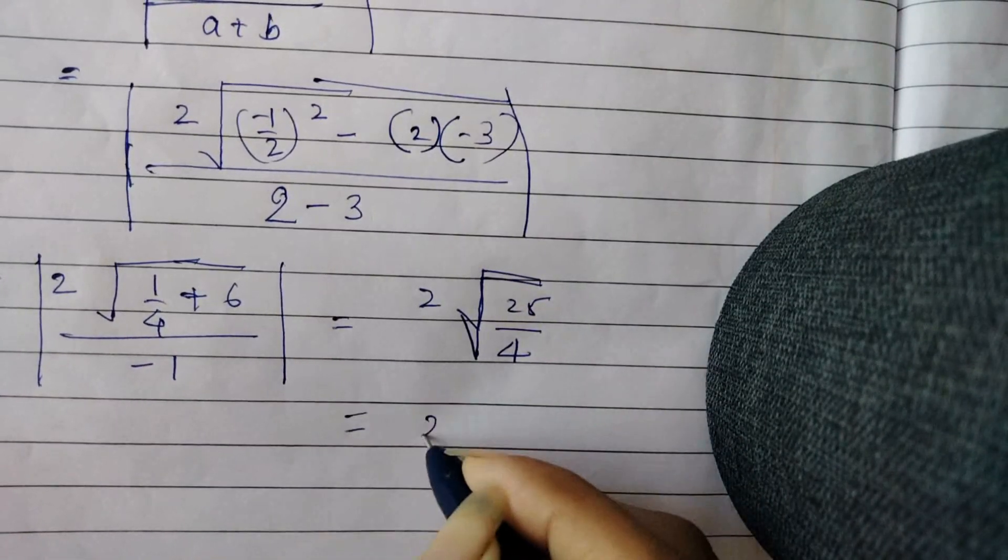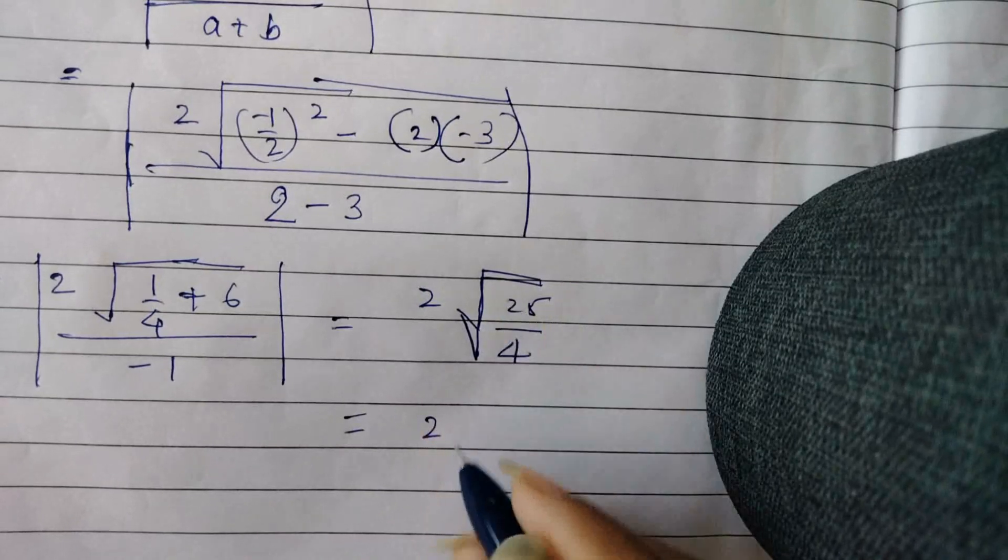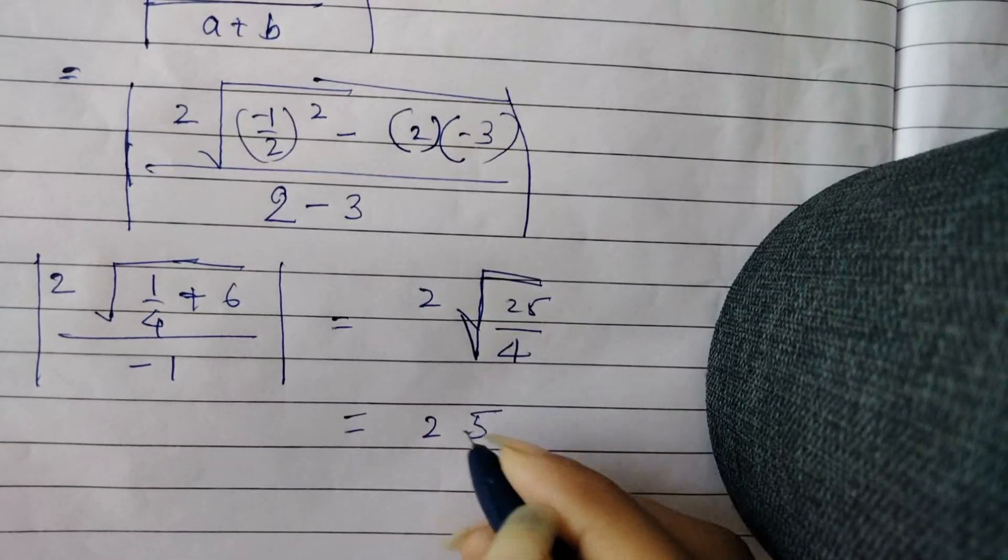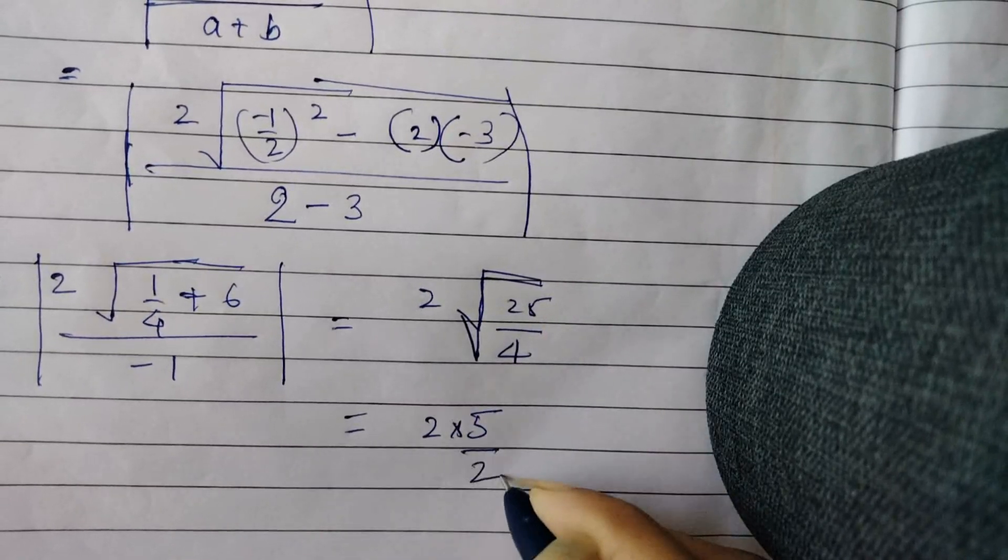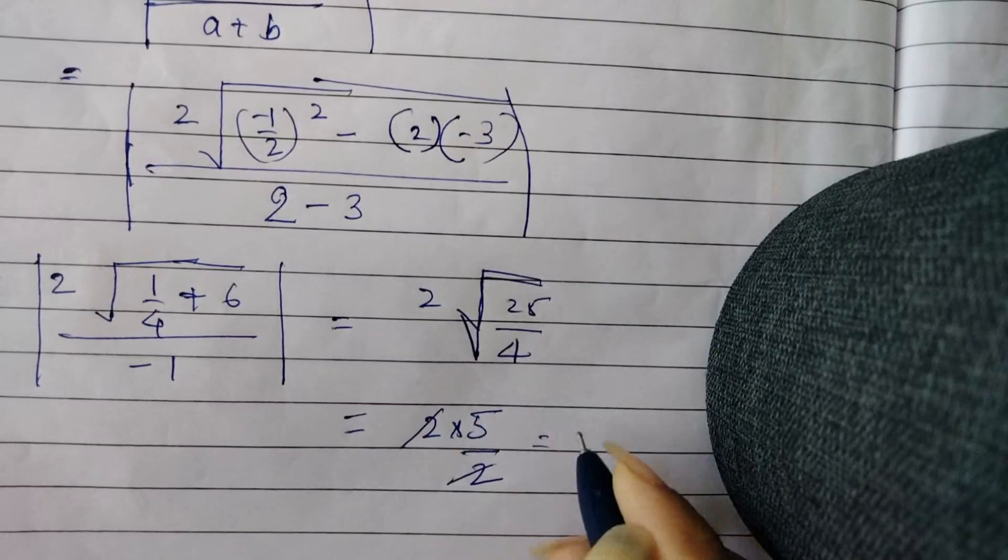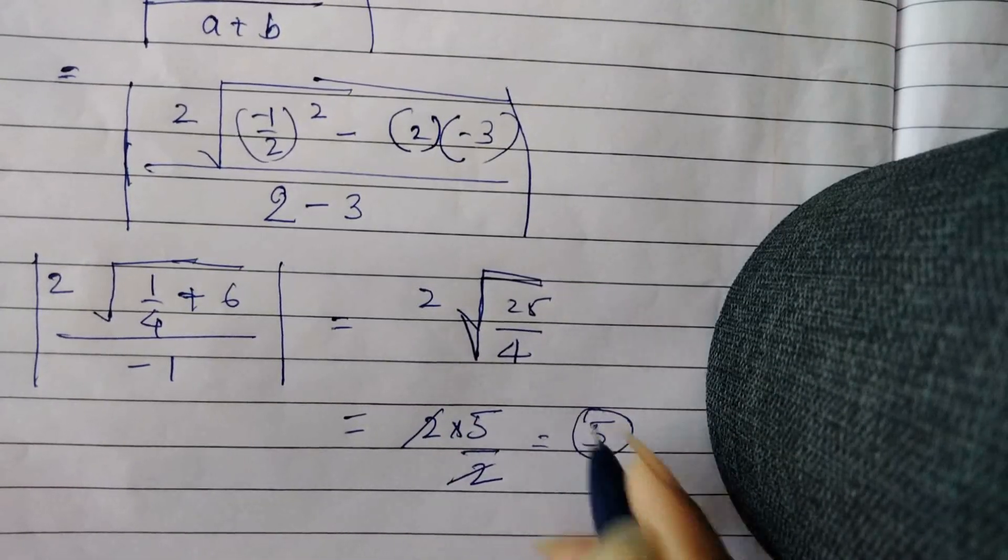So on removing the root we will get 2 times 5/2. 2 and 2 will get cancelled. The value of tan theta is 5.